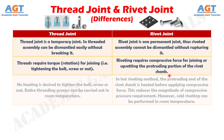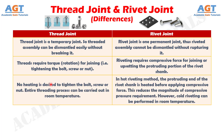Number three: no heating is required to tighten the bolt, screw, or nut. The entire threading process can be carried out at room temperature, whereas in the hot riveting method, the protruding end of the rivet shank is heated before applying compressive force. This reduces the magnitude of compressive pressure requirement. However, cold riveting can also be performed at room temperature.